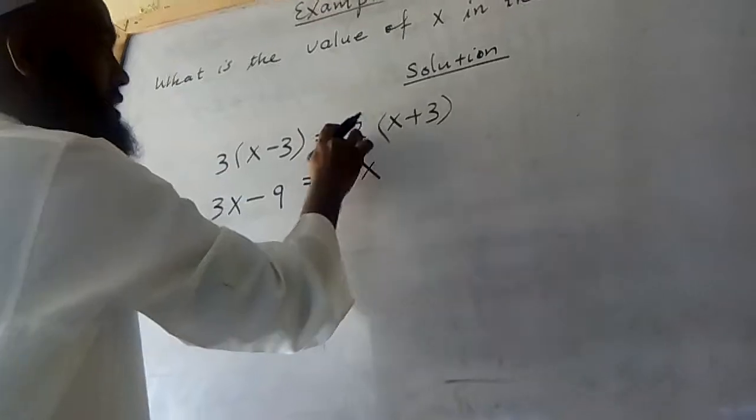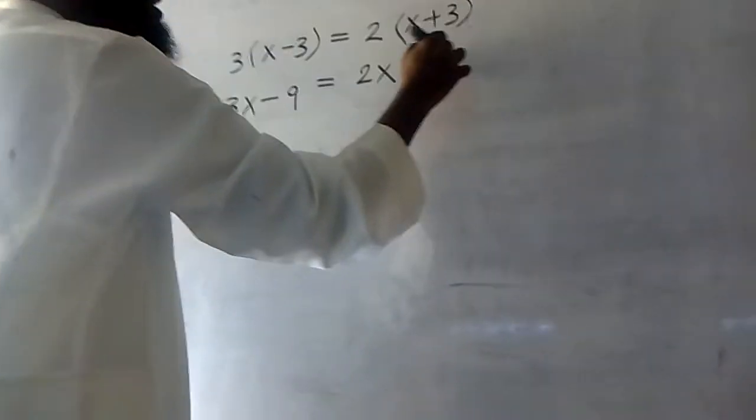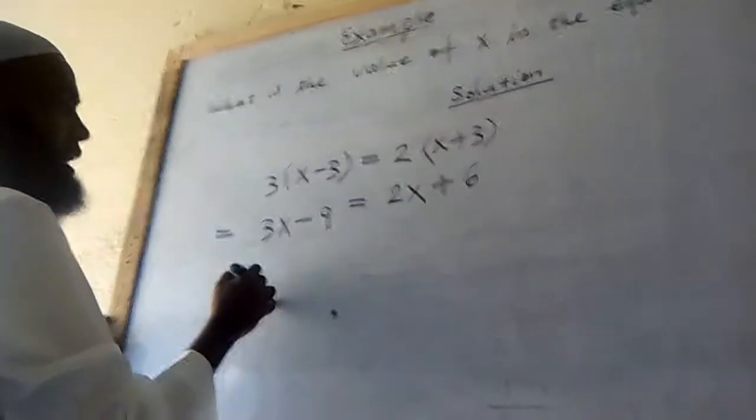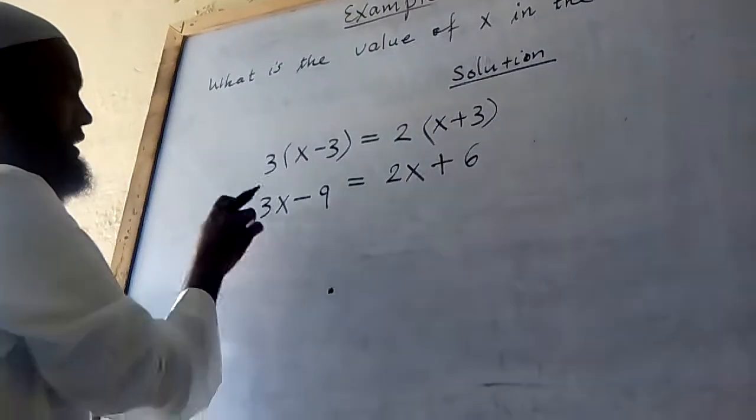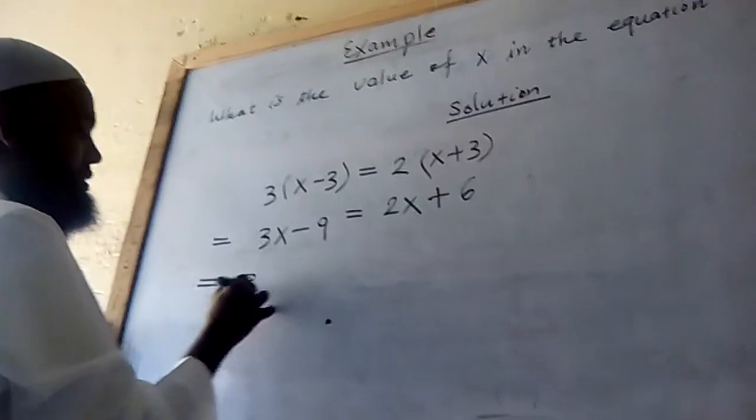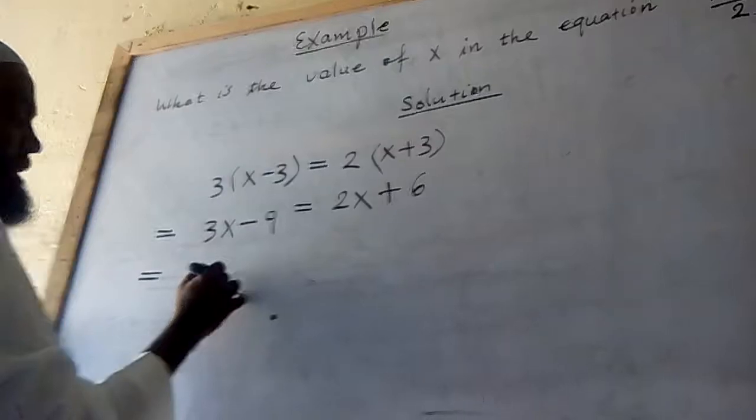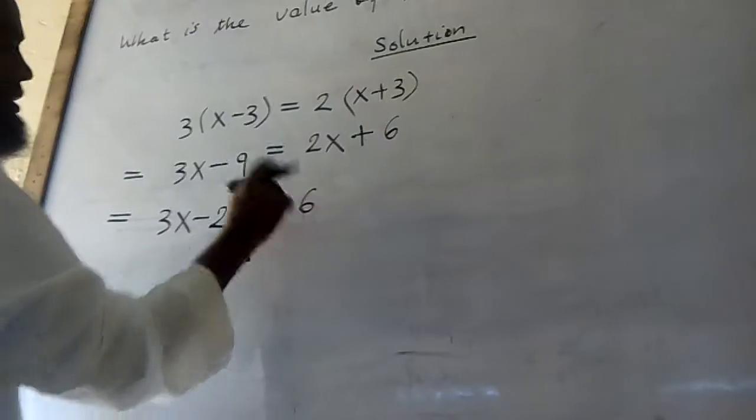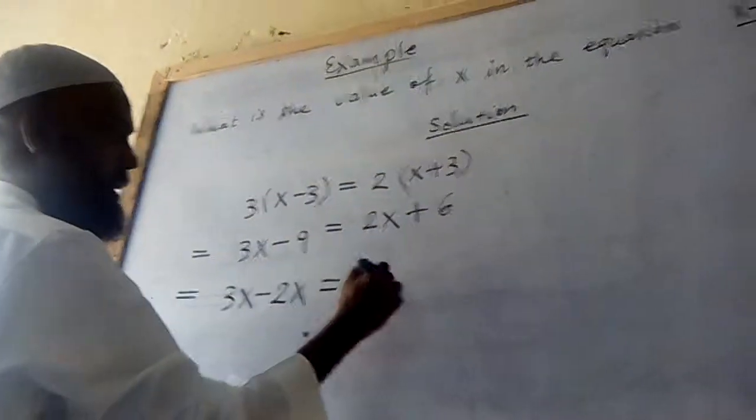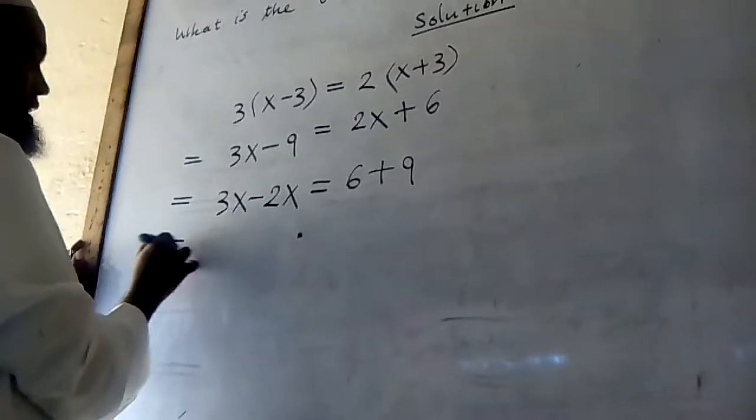Then we have how we switch out and we can get three x minus two x equals six plus nine. So that's three x minus two x equals six, and we're going to solve for x.